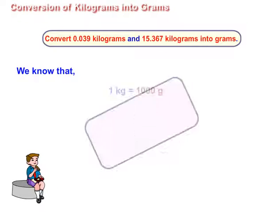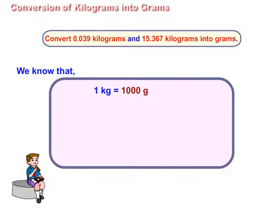We know that 1 kilogram is equal to 1000 grams. So, to convert 0.039 kilograms into grams, we multiply it by 1000. Thus, 0.039 kilograms are equal to 39 grams.